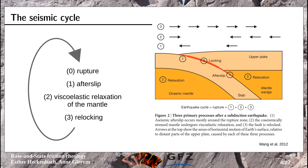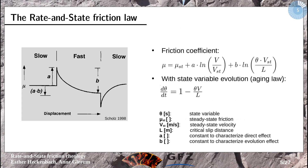To model this — which is essentially a stick-slip behavior for earthquakes, where first a lot is happening and then it locks and nothing happens anymore — this is normally done using the rate and state friction law, which is an empirical law that can fit laboratory data for sliding tests, though there's not really a physical explanation for it yet.